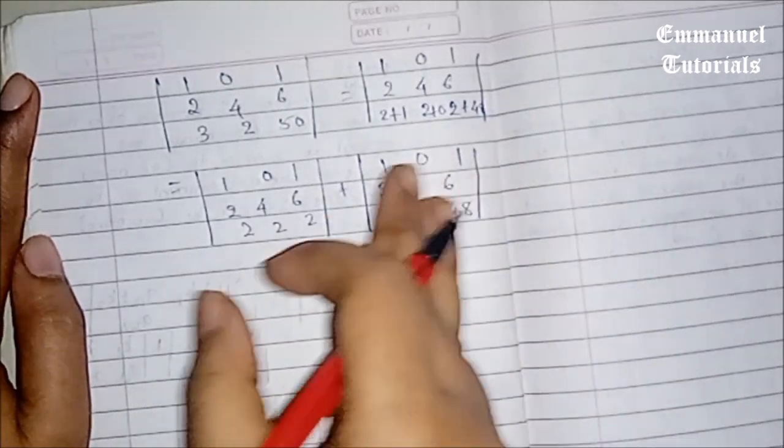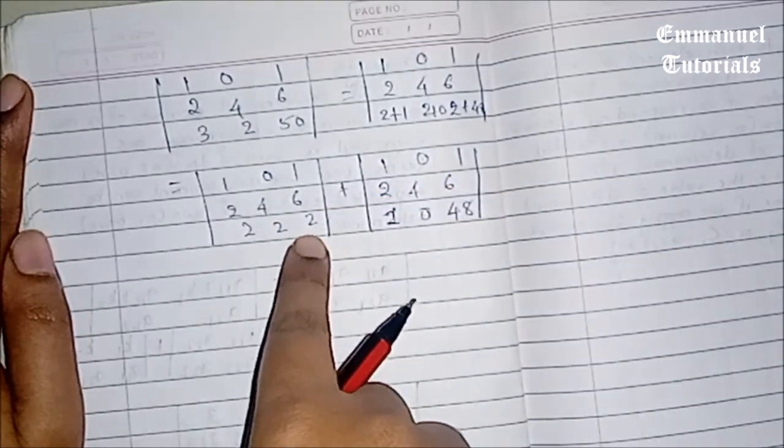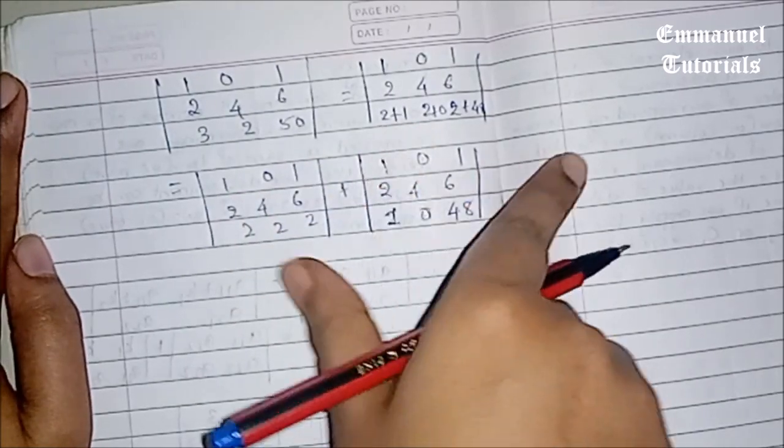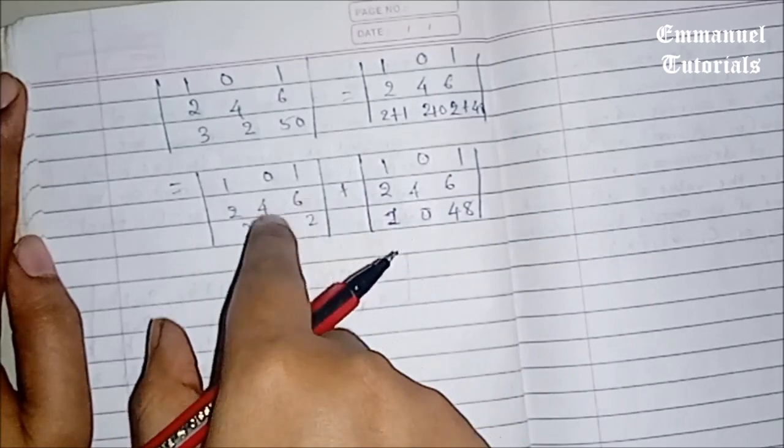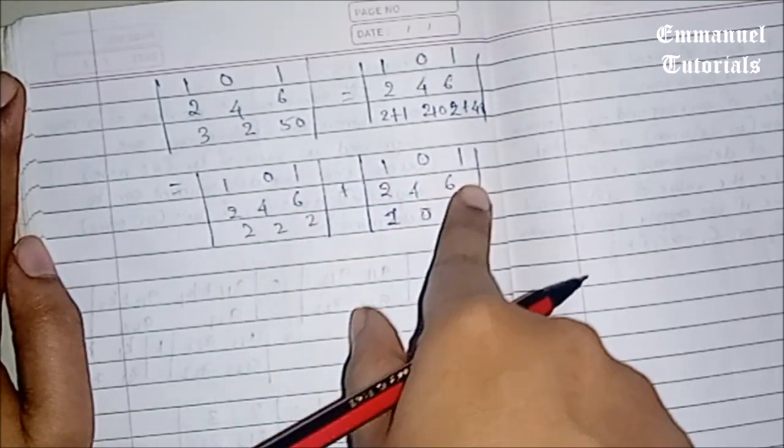So we were able to decrease the complexity of the determinant. So only the rows in which these operations are being performed, those will change. Except those, all the other rows will remain the same. This is how you have to represent.